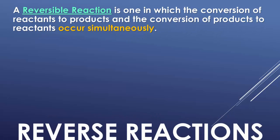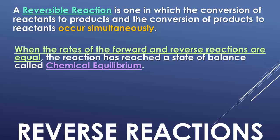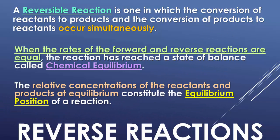A reversible reaction is one in which the conversion of reactants to products and the conversion of products to reactants occur simultaneously. When the rates of the forward and reverse reactions are equal, the reaction has reached a state of balance called chemical equilibrium. The relative concentrations of reactants and products at equilibrium constitute the equilibrium position. It doesn't mean they have to be equal — it just means they stay constant.